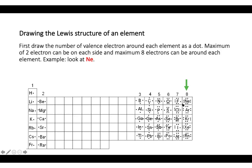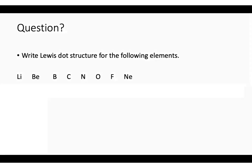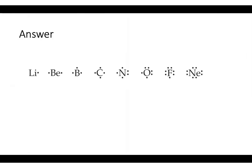Looking at neon: it has eight valence electrons with two electrons on each side. Now let's practice — write the Lewis structure for the following elements. Please pause the video and try to draw the Lewis structures, then continue to check your answers. The process is: first find the number of valence electrons based on the group number, then place those electrons as dots around the element symbol.